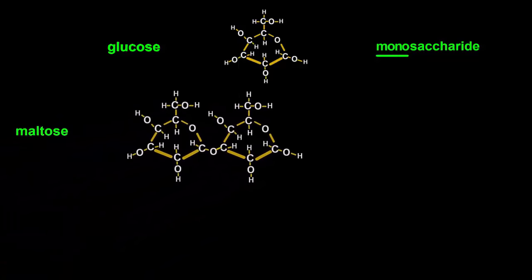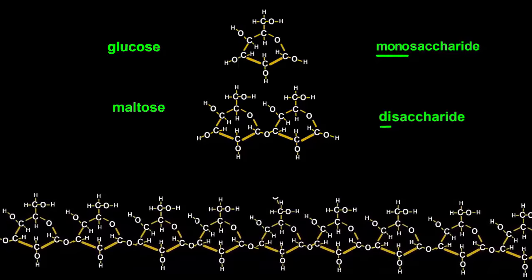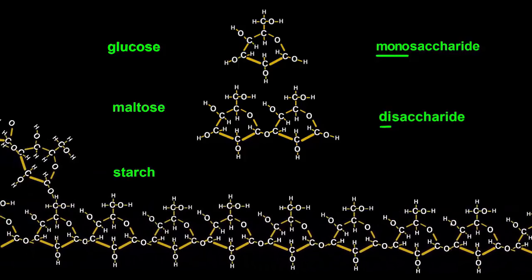Maltose consists of two glucose molecules joined together, so it's called a disaccharide. Di means two. Because a starch molecule is made of many glucose molecules joined together, it's called a polysaccharide.